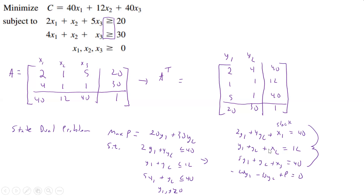Now we're going to take this and put it into our tableau. We started with minimization, took our A, did our A transpose — first row becomes first column, second row becomes second column, third row becomes third column. Then we stated our dual problem from that. The bottom row is what we maximize, everything else is subject to. We convert it by adding the slack variables to make the E system. Our slack variables are not S's anymore, they're X's, because that's going to be our initial thing. Once we've solved this, we'll have X's at the top and we're going to read to the bottom.